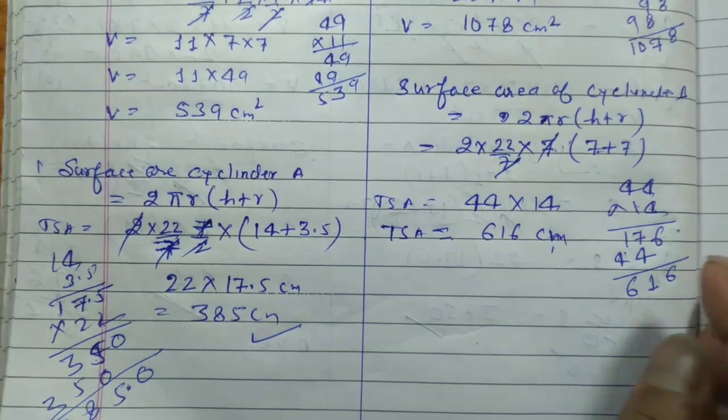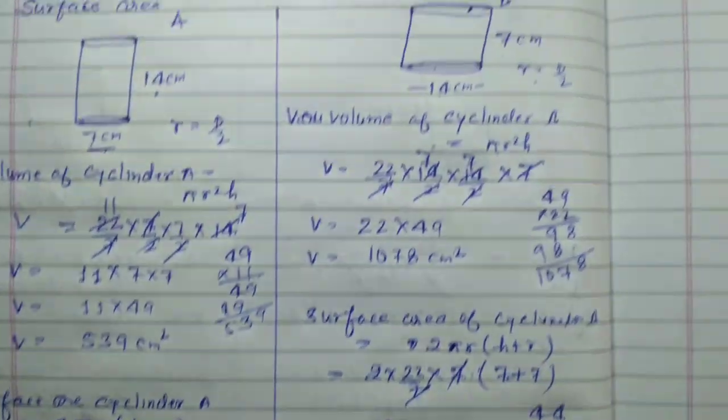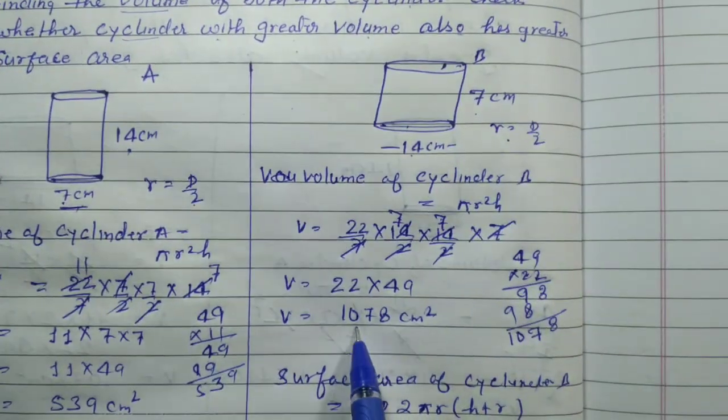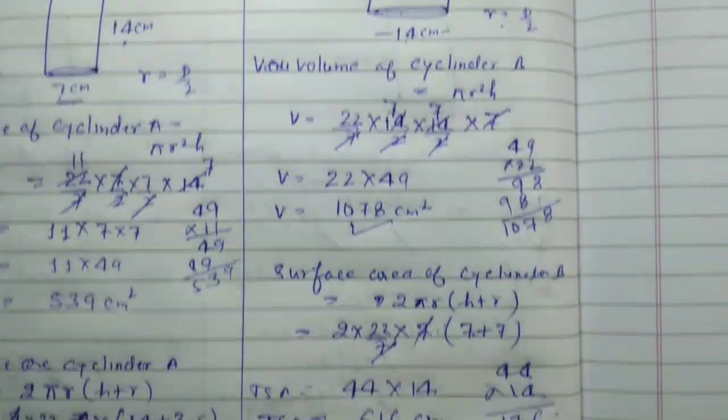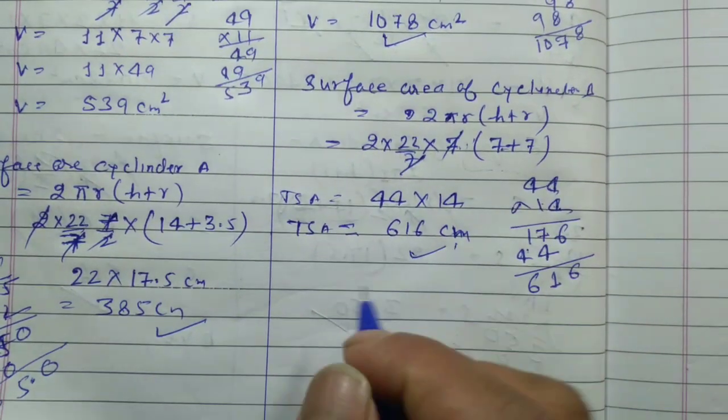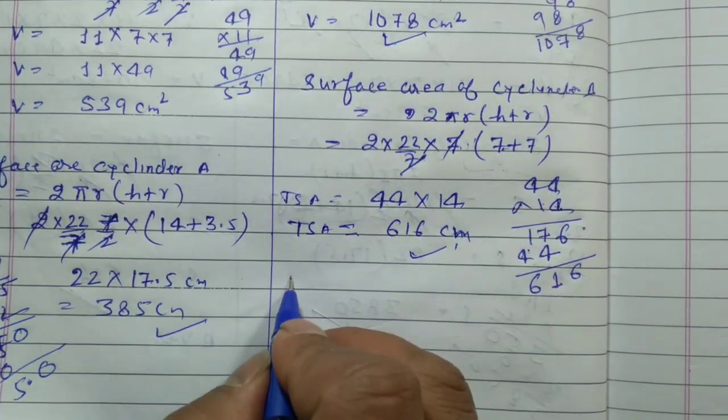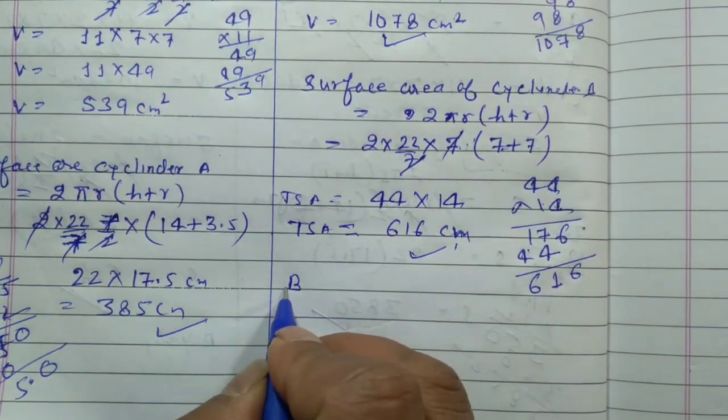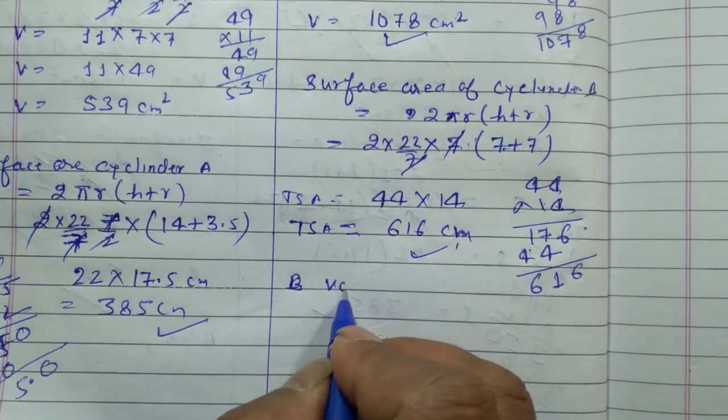अब हमने देखा — जिस cylinder का volume ज्यादा था (cylinder B), उसका surface area भी greater आ रहा है। तो हम कह सकते हैं कि volume और surface area दोनों cylinder B के greater हैं।